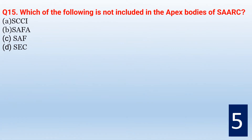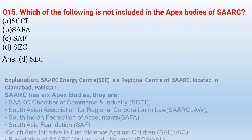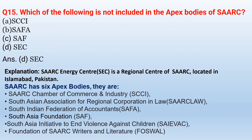Which of the following is not included in the apex bodies of SAARC? The correct option is option D — SEC (SAARC Energy Center), which is a regional center of SAARC located in Islamabad, Pakistan. SAARC has six apex bodies: SAARC Chamber of Commerce and Industry, South Asian Association for Regional Cooperation in Law, South Indian Federation of Accountants, South Asia Foundation, South Asia Initiative to End Violence Against Children, and Foundation of SAARC Writers and Literature.